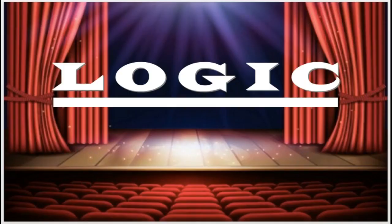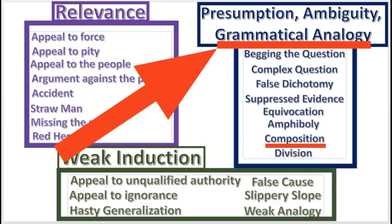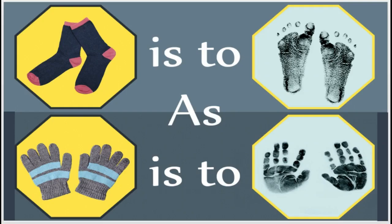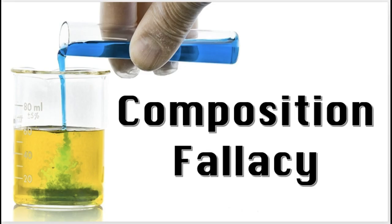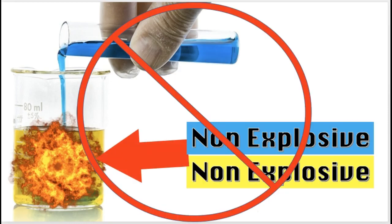Ladies and gentlemen, welcome to this episode of Logic. The fallacy of composition is the topic of this video. It's a fallacy of grammatical analogy, which means that it occurs in an argument that is grammatically similar to other non-fallacious arguments. The fallacy of composition is committed when the arguer wrongly transfers an attribute from the part of something onto the whole.